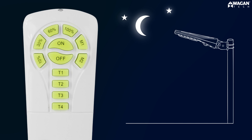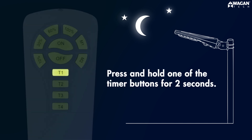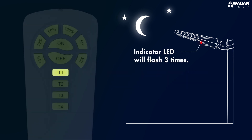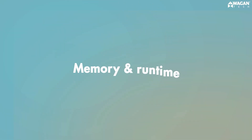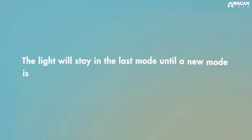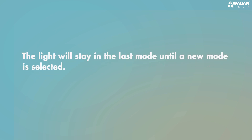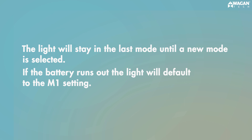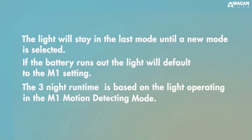To cancel the timer mode, long press one of the timer buttons for two seconds. The indicator LED on the light will flash three times. The light will stay in the last mode until a new mode is selected. If the battery runs out, the light will default to the M1 setting. The three night runtime is based on the light operating in the M1 motion detecting mode.